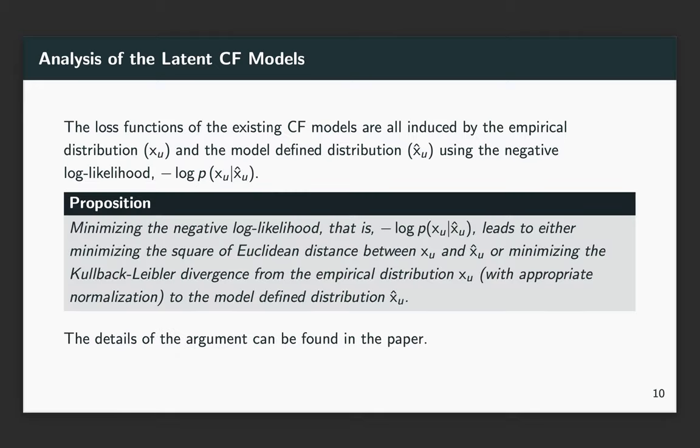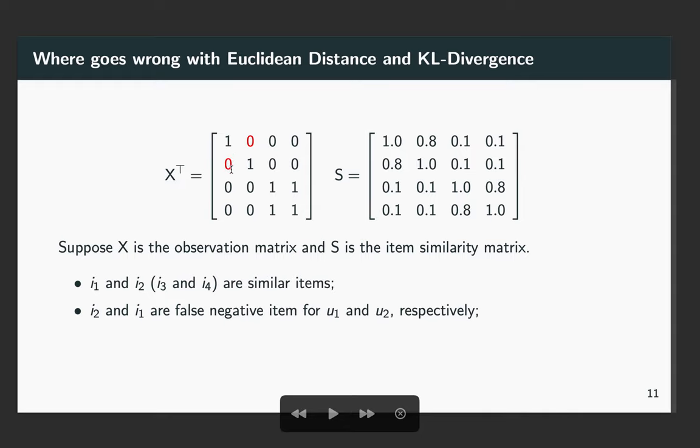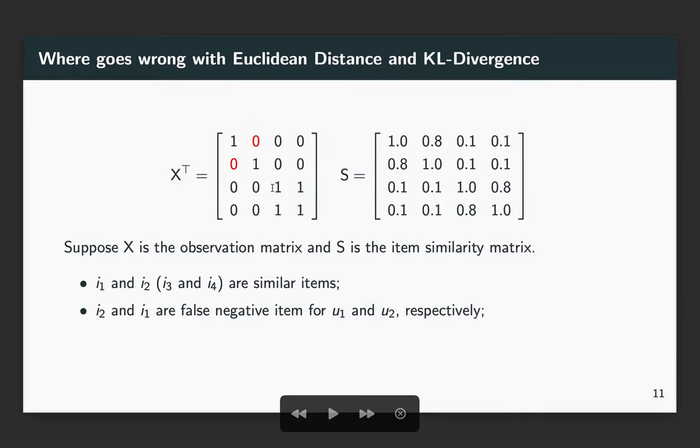In this paper, we argue that minimizing the negative log-likelihood leads to either minimizing the KL divergence or the Euclidean distance. To see the problem of these two loss functions, consider there are four users and four items. In the item similarity matrix, i1 and i2 are similar items, and i2 and i1 are false negative items for u1 and u2 respectively.